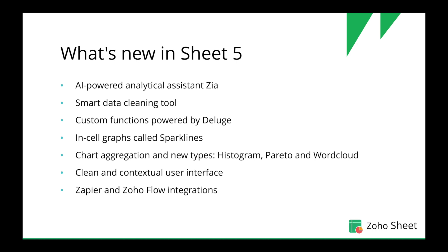That's why we introduced custom functions in Zoho Sheet, powered by Deluge. Deluge is a programming language created by Zoho — we call it the programming language for non-programmers because its drag-and-drop interface is that easy to use. Next, sparklines are in-cell graphs which you can use to observe and analyze data trends or patterns right alongside your data, so instead of viewing charts separately you can view them right inside the cell.